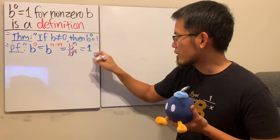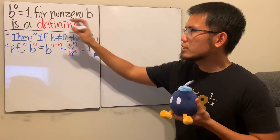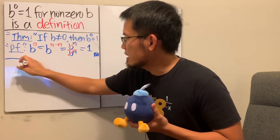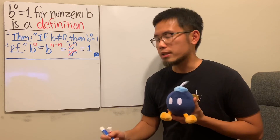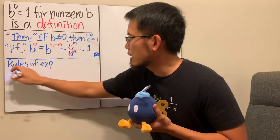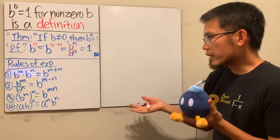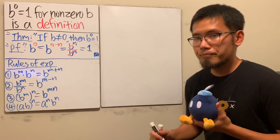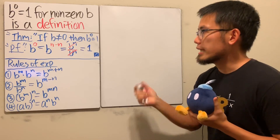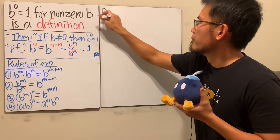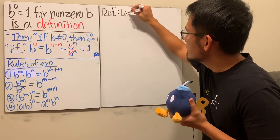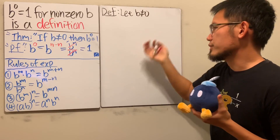It looks like we totally have a proof, so maybe I'll put a little box here. However, I will tell you why this is actually a definition. Before I do that, I need to build things up. The first thing is to recall all the rules of exponents. Here are the fundamental ones. Now to talk about why this is a definition, let's look at the basic definition of the exponent first.